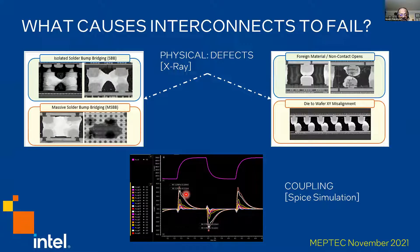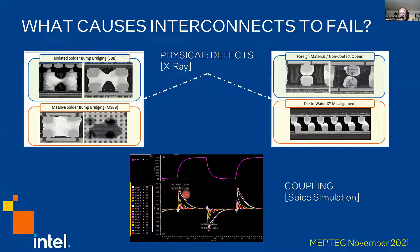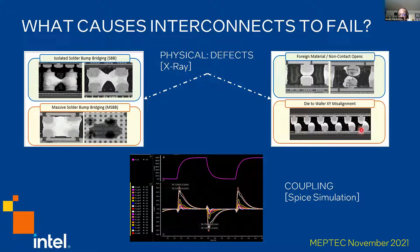On the bottom left, the solder bump bridging may not only involve two signals; it could involve multiple signals within a cluster, or even go across clusters — three, four, or more. On the top right, foreign materials could be deposited, resulting in imperfect contacts — contact opens. And finally, at the bottom right, we have a misalignment where a large number of signals will be misaligned because of the defect.